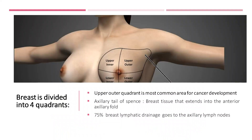We will start by defining important landmarks. The breast is divided into four quadrants. The upper outer quadrant is the most common area for breast cancer development. Breast tissue that extends into the anterior axillary fold is called the axillary tail of Spence. It is important to palpate patients in this region on physical examination because 75% of the breast lymphatic drainage goes to the axillary lymph nodes.